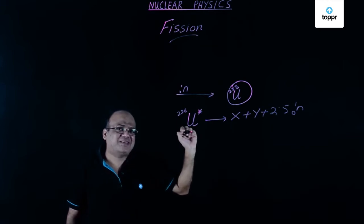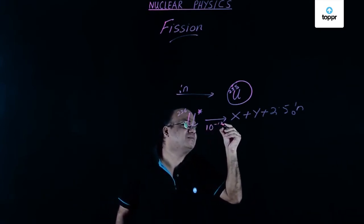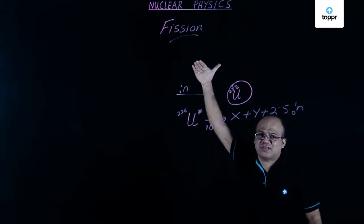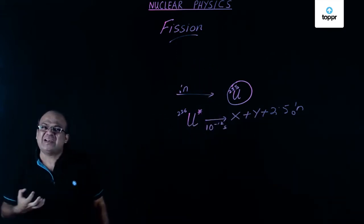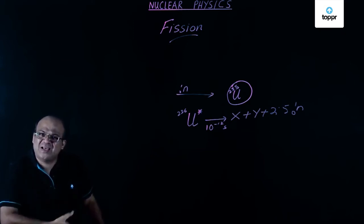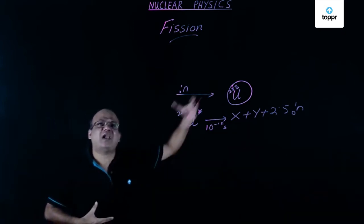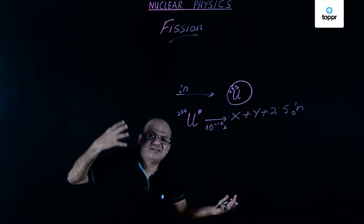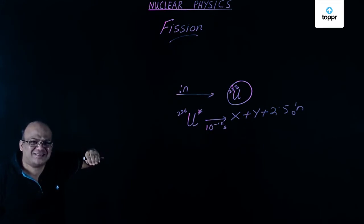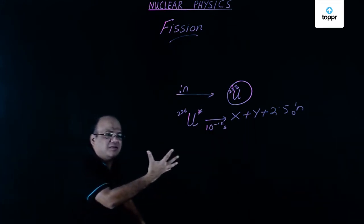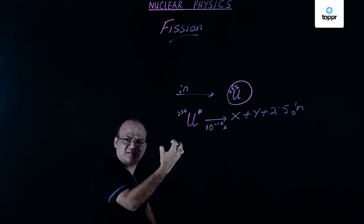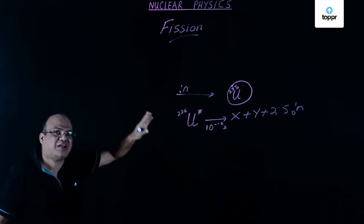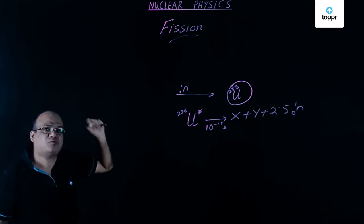This takes place in 10 to the power minus 12 seconds — very, very fast. If you remember, an electron jumps from a higher energy level to a lower energy level in 10 to the power minus 8 seconds. When a nucleus emits an alpha particle or a beta particle it goes to an excited state and jumps back in 10 to the power minus 10 seconds. But here this intermediate nucleus breaks up into two parts and produces 2.5 neutrons on average in 10 to the power minus 12 seconds.